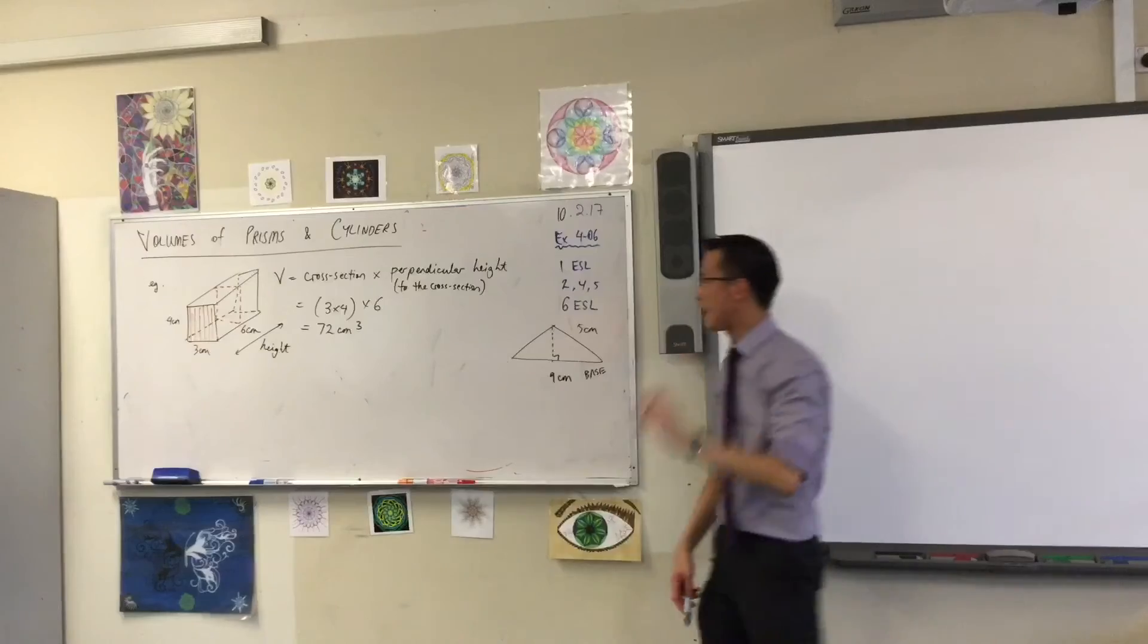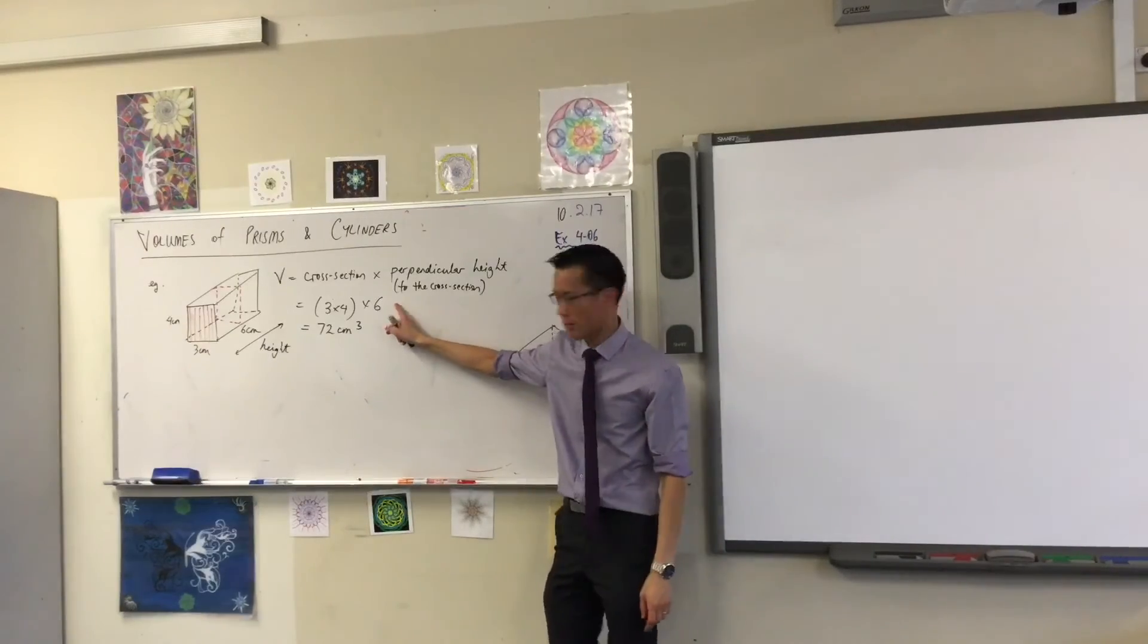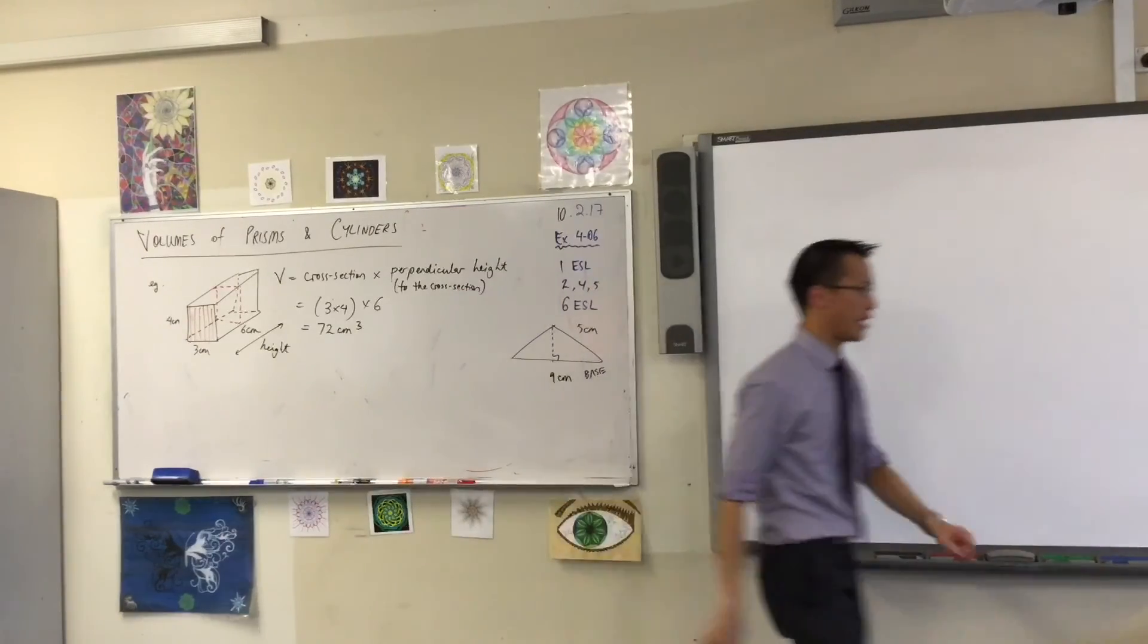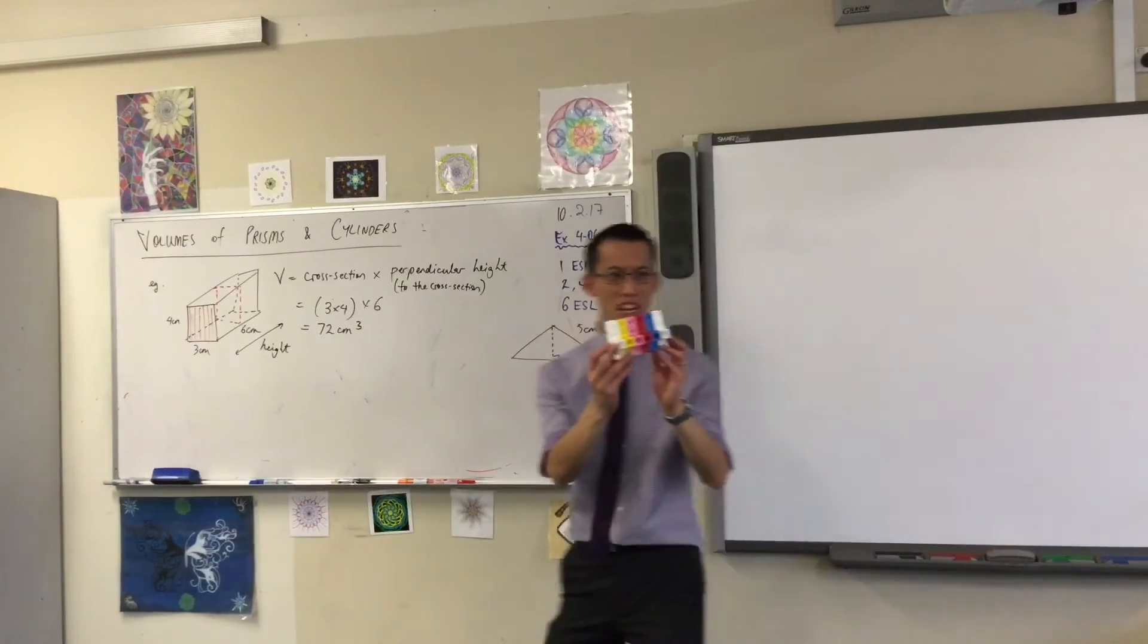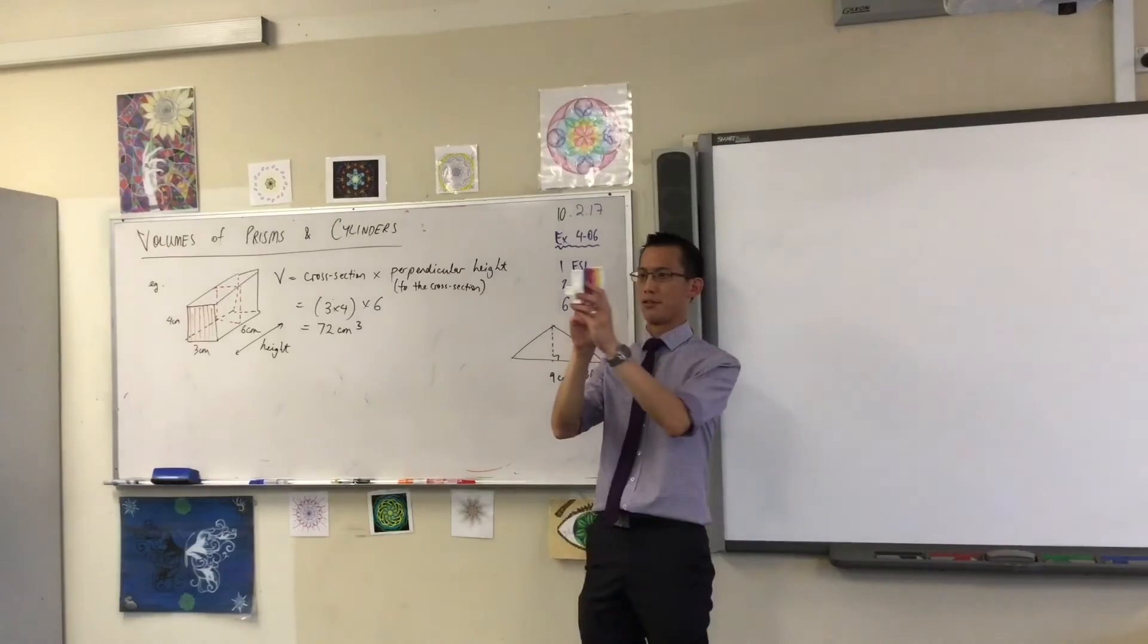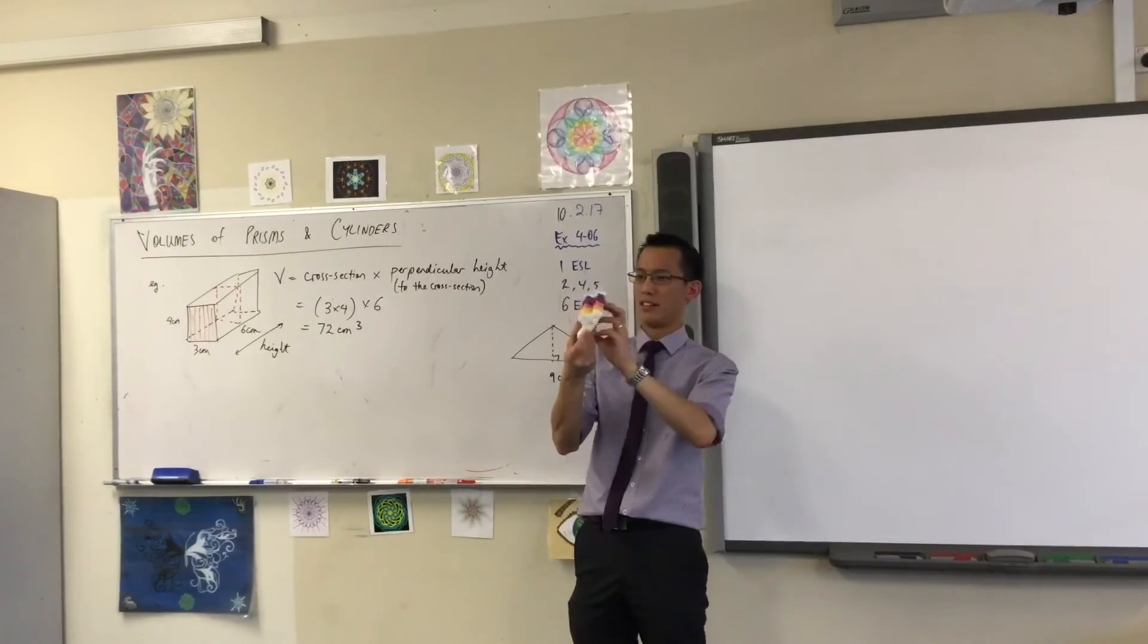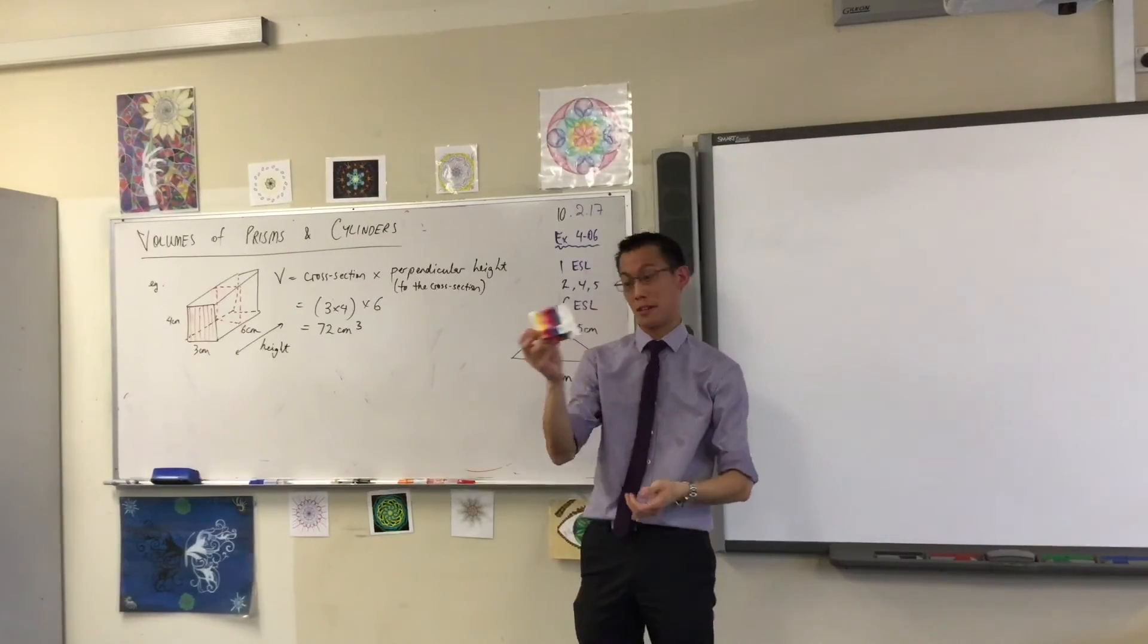So, the reason why I highlight this, rather than just going straight to the numbers, is because this helps us understand, this way of understanding will work with any prism, even prisms that are like, what on earth is this called? I don't know, like a tetris-shaped prism? I don't know what it's called.